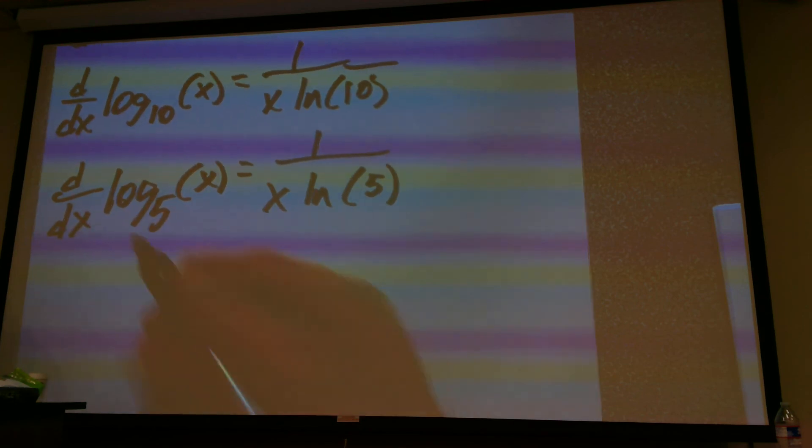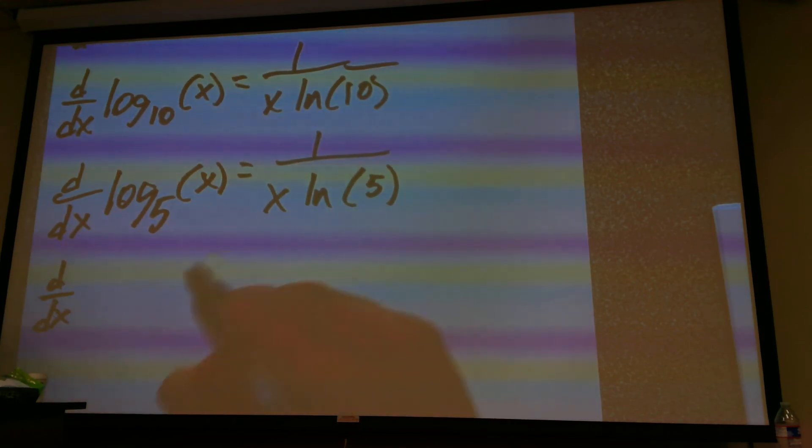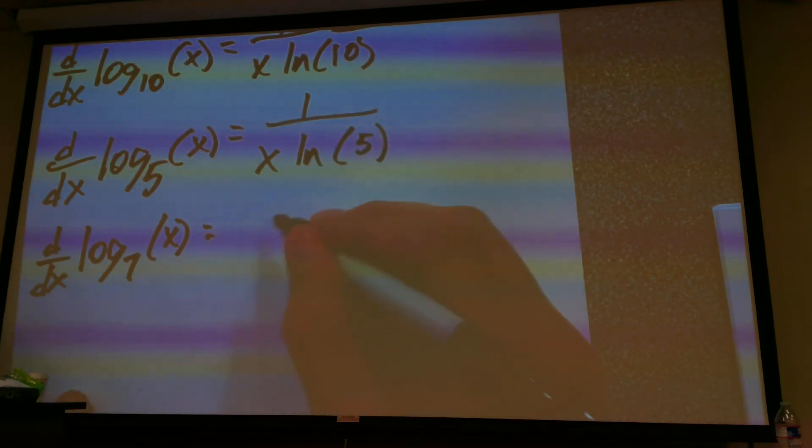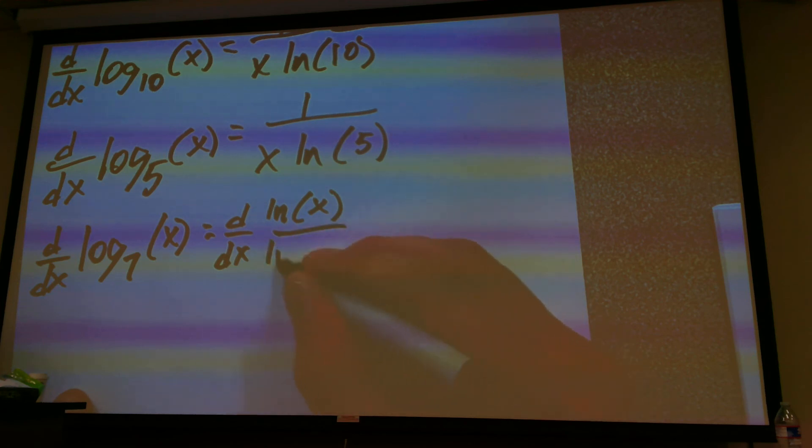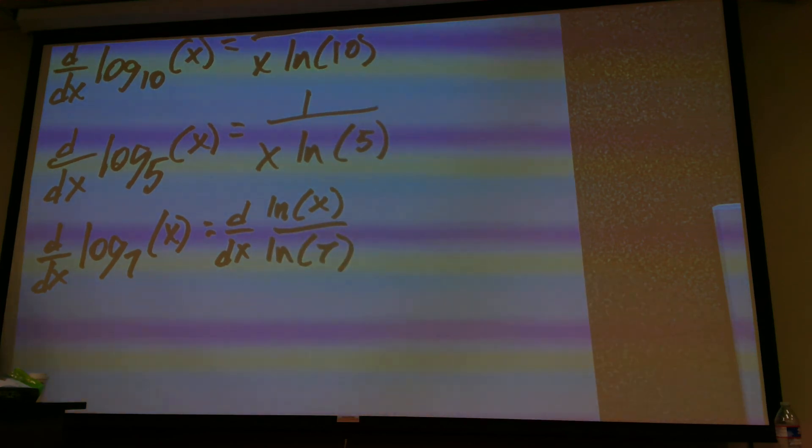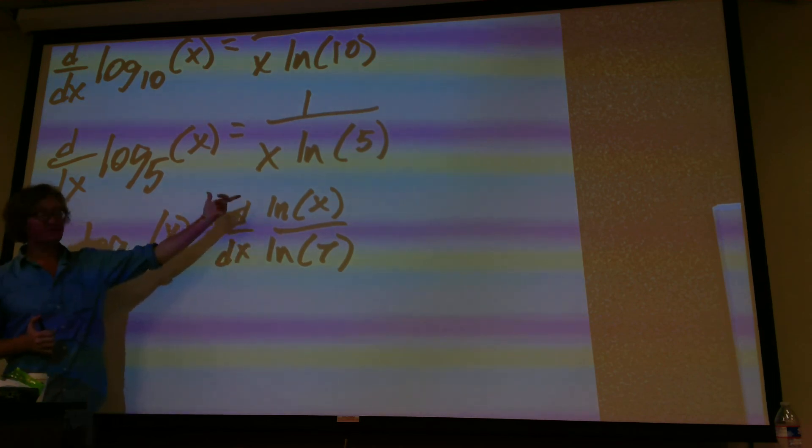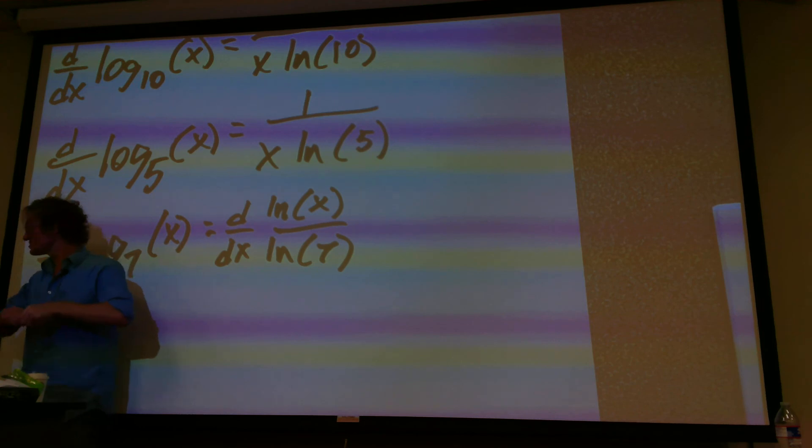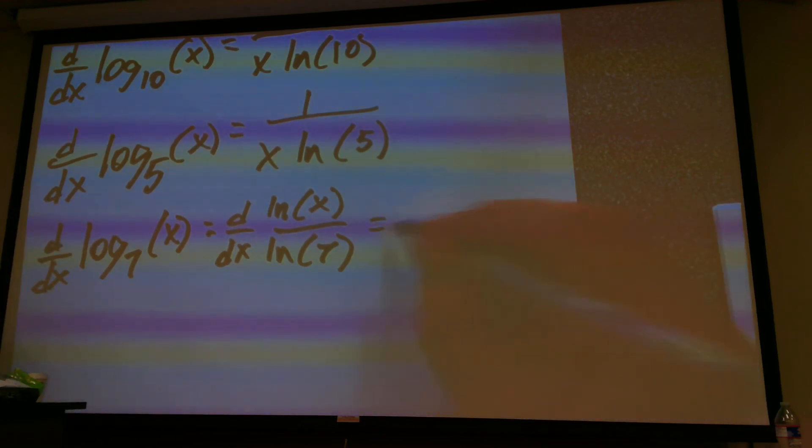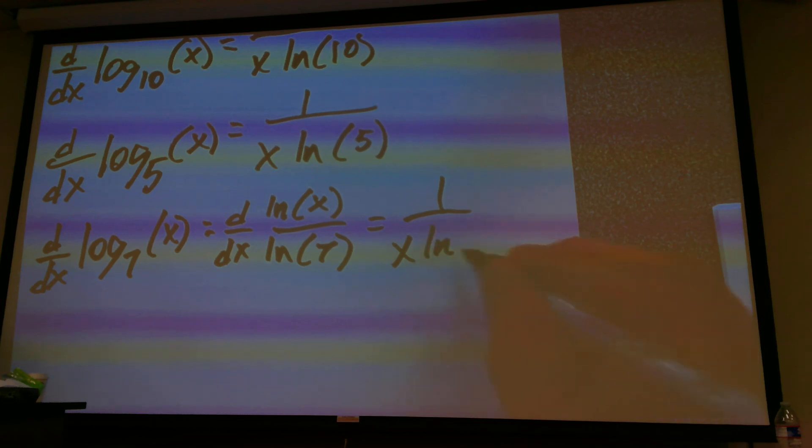And why does this actually happen? So, if you have, let's say, we were taking the derivative of log base 7 of x. Another way to write this problem is through the laws of logarithms, you can write this as the natural log of x divided by the natural log of 7. And now, the natural log of 7 is just a constant. So, what do you take the derivative of? You're taking the derivative of the natural log of x. The derivative of the natural log of x is 1 divided by x. So, that's how we get to the point of 1 divided by x natural log of 7.